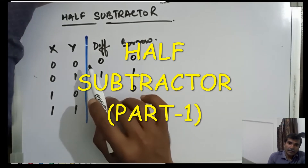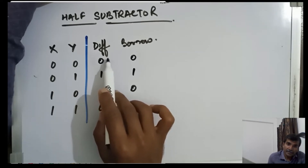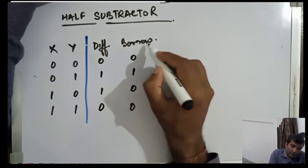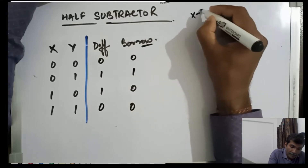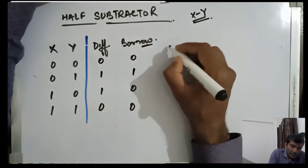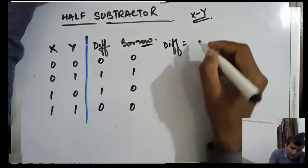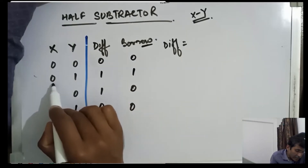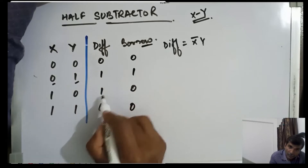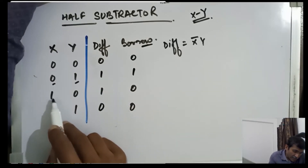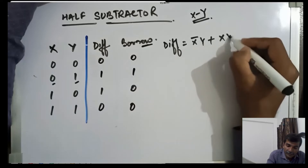A half subtractor will subtract the second bit from the first bit and give you the difference and the borrow, if any. So it will do x minus y. The difference as a function of x and y: difference is 1 when x is 0 and y is 1, that is x̄y, or it is 1 when x is 1 and y is 0.